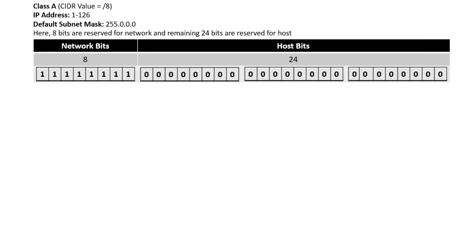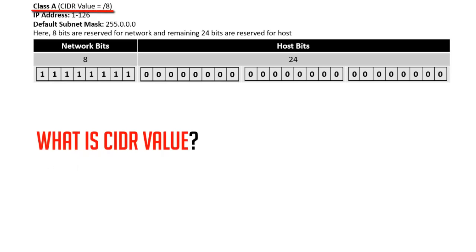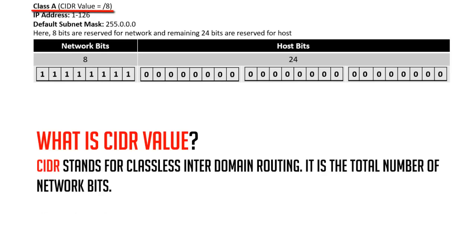Let's start with the classes of IP address. Class A IP address starts from 1 to 126, its default subnet mask is 255.0.0.0, and its default CIDR value is 8. CIDR stands for Classless Inter-Domain Routing, and it is the total number of network bits.